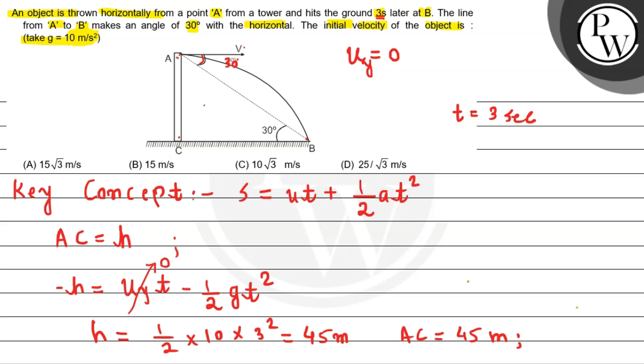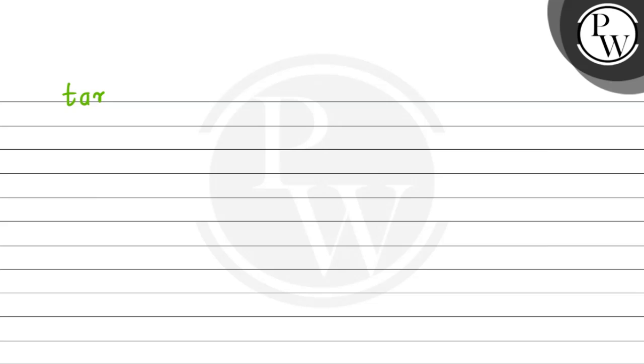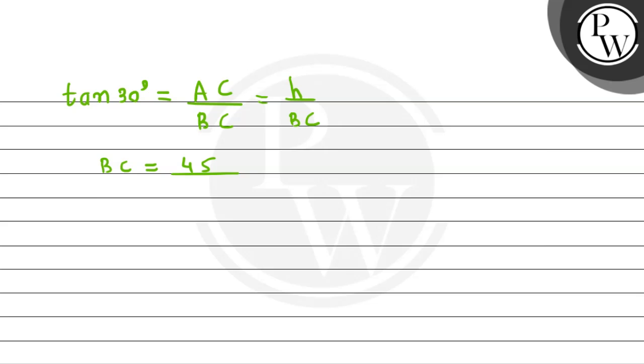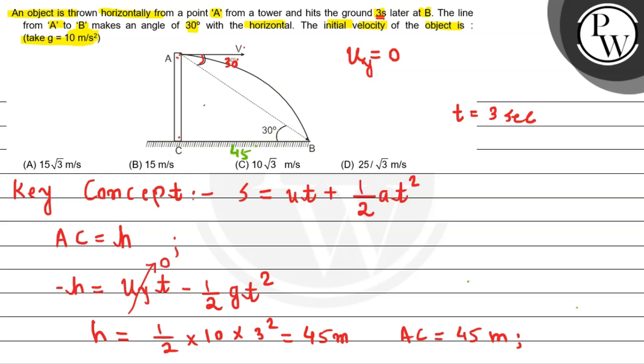Now from figure, if we see, this angle is equal to 30 degrees. So according to trigonometry property, we can say that tan of 30 equals to opposite upon adjacent, that is AC divided by BC here. So AC equals to height of the tower, that is h divided by BC. So from here we can say that BC will be equals to h upon tan of 30. Now h we have already found as 45 meter divided by tan of 30, which is one by under root of 3, so it comes out 45 into under root of 3 meter. So we get BC length as 45 under root of 3.